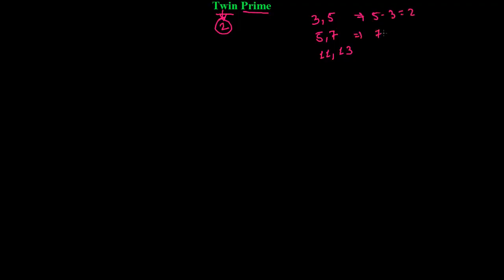Similarly here, 7 minus 5, that's 2. Again, 13 minus 11, that's 2. So, every time, see here, the difference between these two prime numbers, these two prime numbers are always 2.